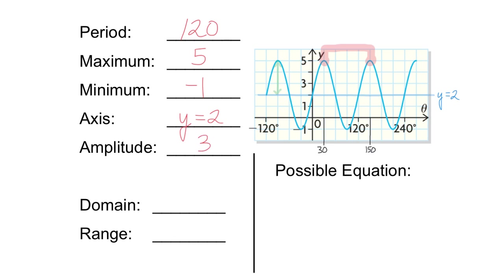Now, the amplitude. Remember, that's the distance from the center, the central axis, to the maximum or to the minimum. On this graph, the central axis is at 2, the maximum is at 5. That means the amplitude is 3.